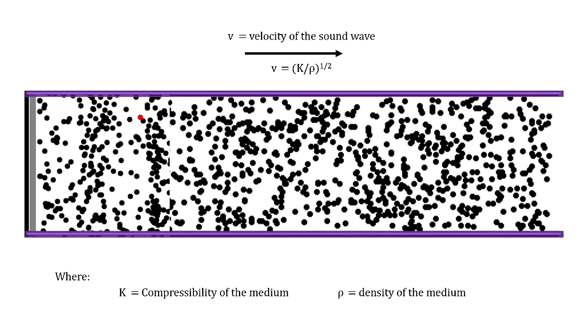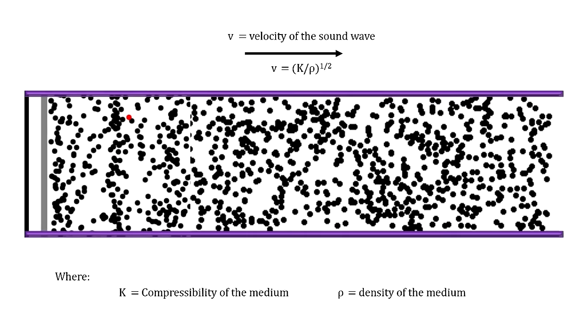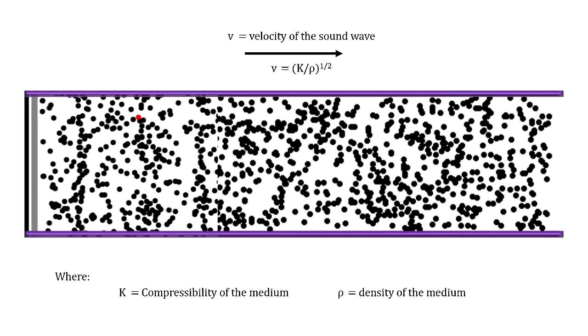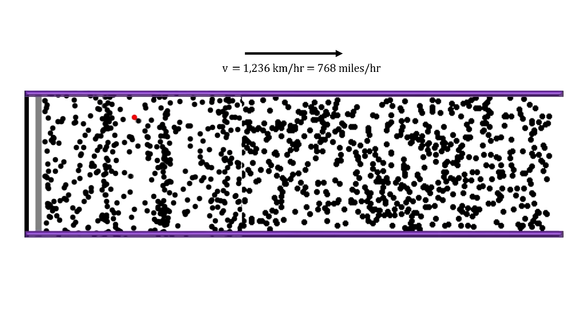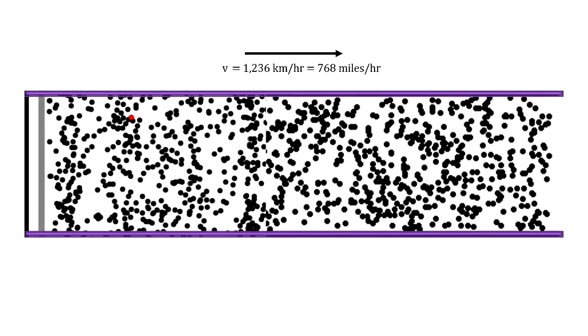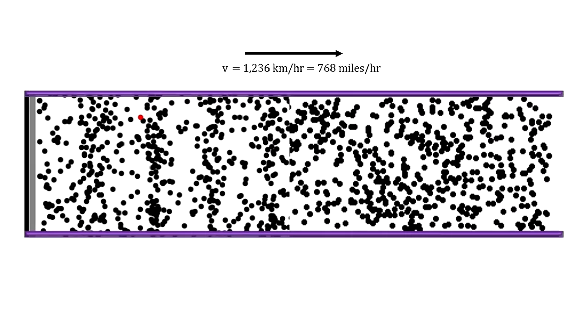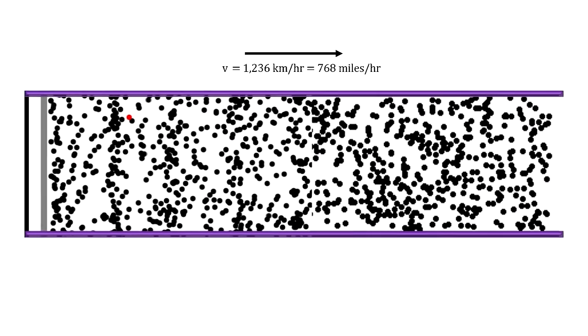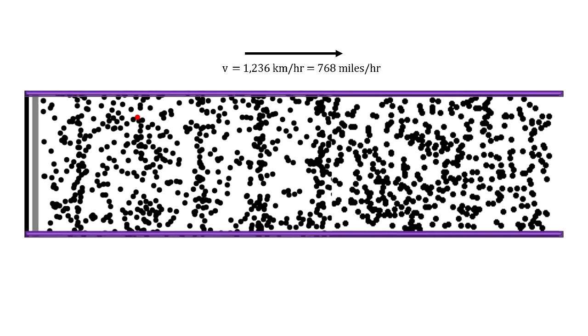And the closer the molecules are to each other, its density, the slower the movement. In dry air, at 20 degrees centigrade, that's 68 degrees Fahrenheit, the speed of sound is 1,236 kilometers per hour.